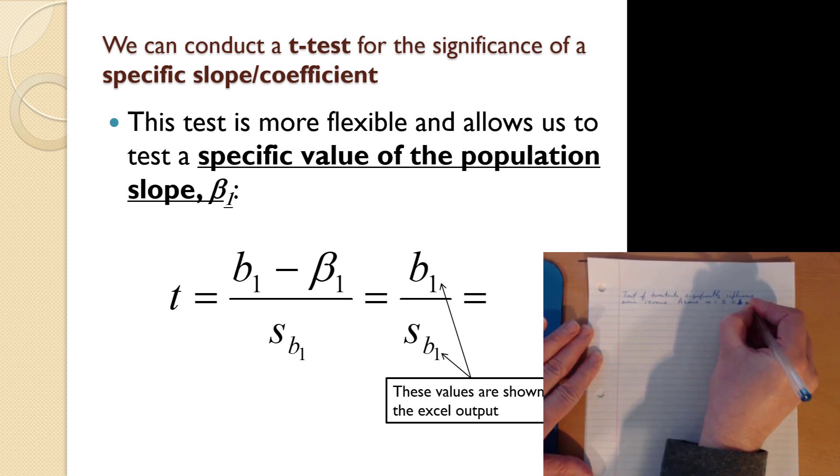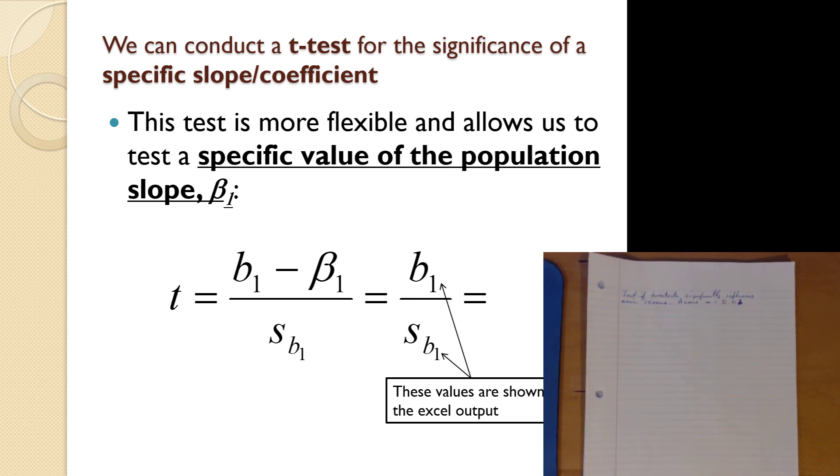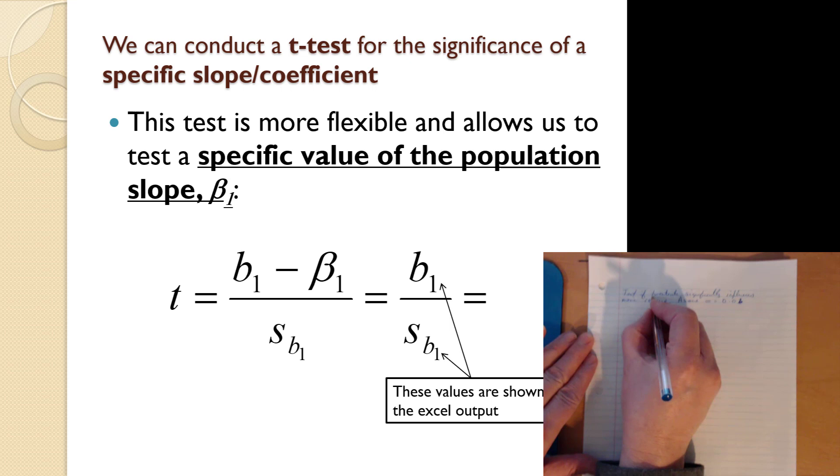Assume alpha equal to 0.06. We should keep alpha the same throughout the entire exercise. So we're gonna test if tweet rate significantly influences movie revenue.